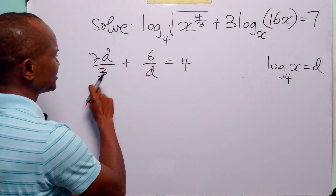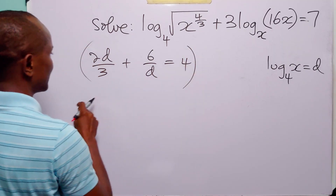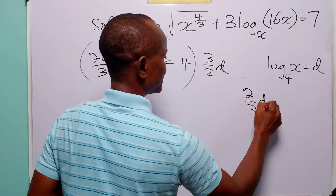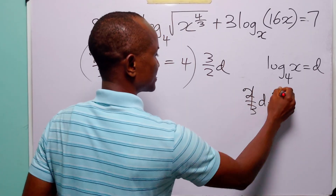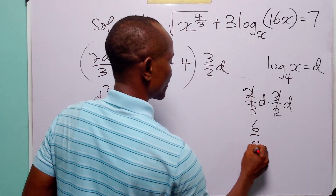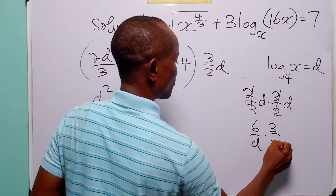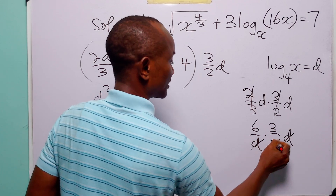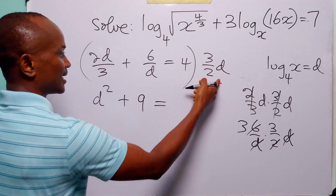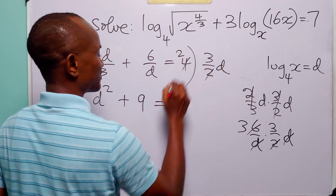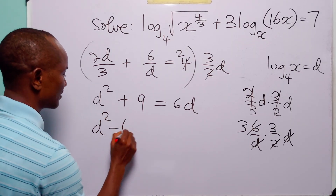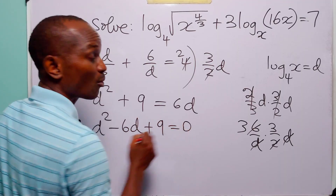Now to get rid of these two fractions, let us multiply through this equation by 3 over 2d. Here we have 2 over 3d multiplied by 3 over 2d — this is going to cancel, and 2 is going to cancel, leaving us with 3. 3 times 3 is equal to 9. And rearranging this quadratic equation, we have d squared minus 6d plus 9 is equal to 0.